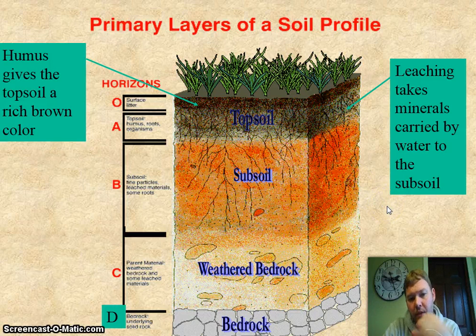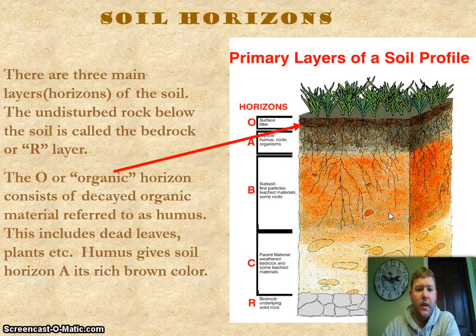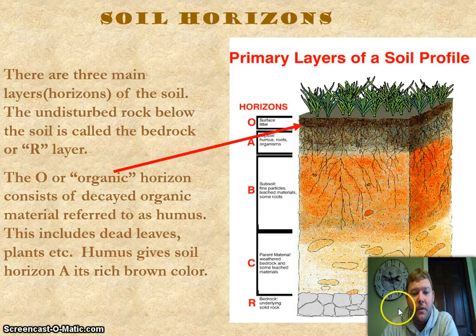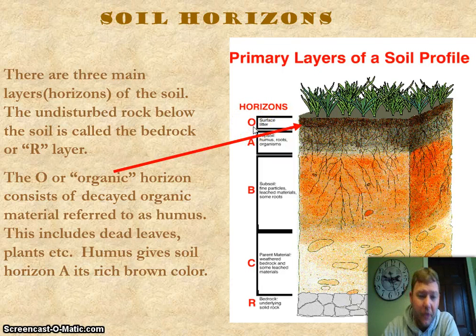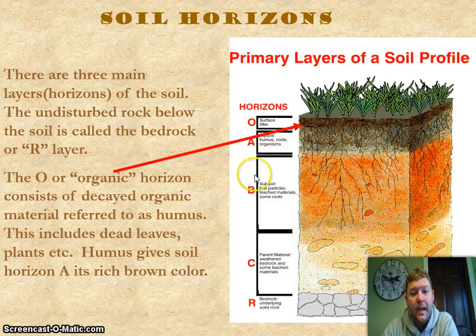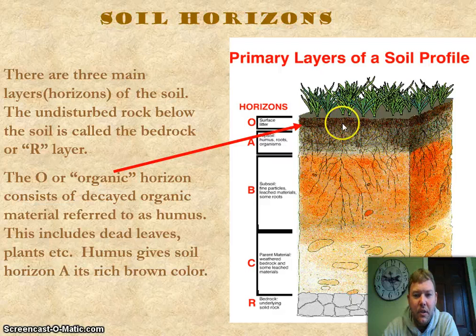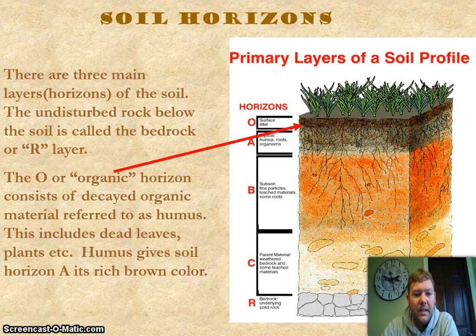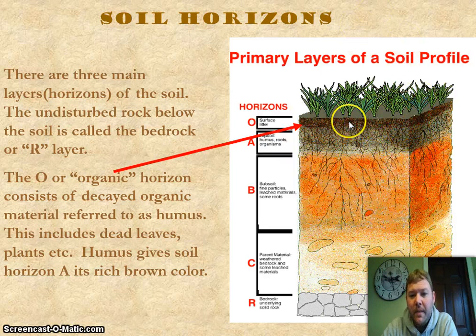There are three main layers of soil, and the undisturbed rock below is called bedrock, with parent material beneath it. Starting at the top is the O layer — think of O like the shape of your head, which sits on top of your body, so it sits on top of soil. It's the organic horizon, just a few inches deep, consisting of all that decayed organic material — dead leaves and plants. This humus gives the soil horizon its rich color and makes it very fertile.